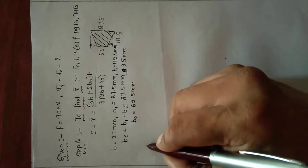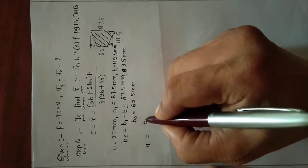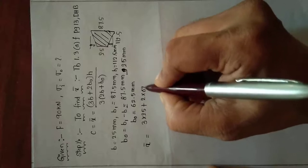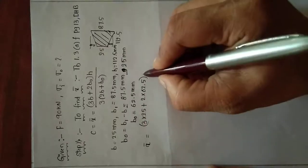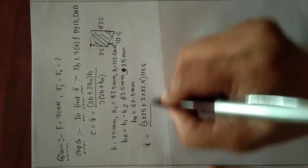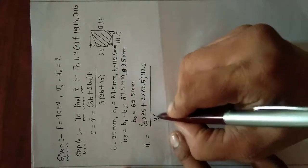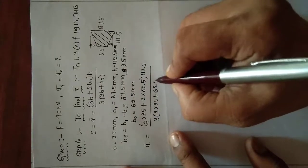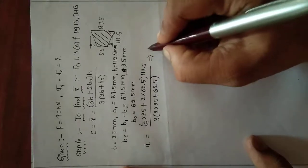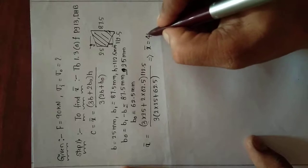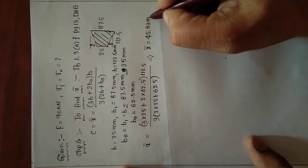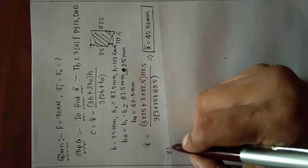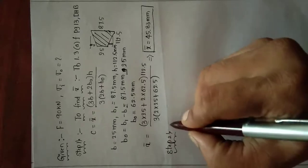Now directly substituting these values into x-dash: x-dash equals 3 times 25 plus 2 times 62.5 times 112.5, whole divided by 3 times (2 times 25 plus 62.5). Finally I got x-dash value as 45.83 mm.